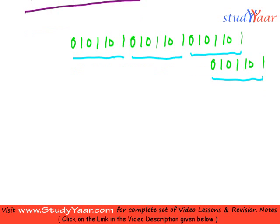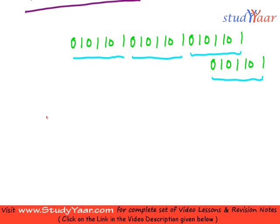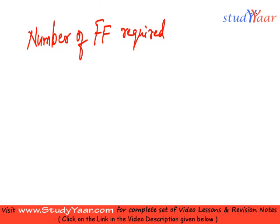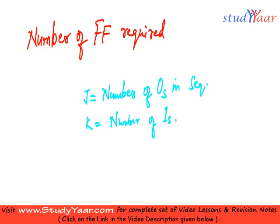So in a sequence generator, the number of flip-flops is calculated like this. Number of flip-flops required. For that, what you would do is, let's suppose j is equal to number of zeros in your sequence, and k is equal to number of ones in your sequence.